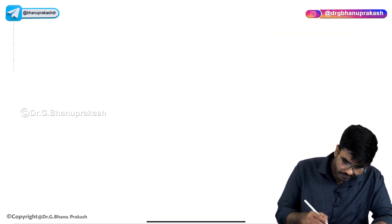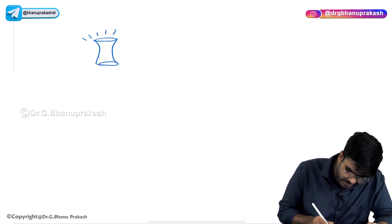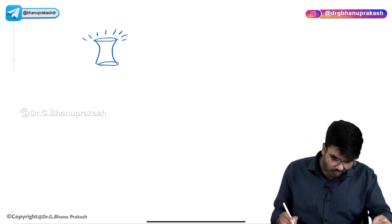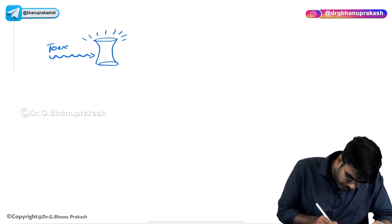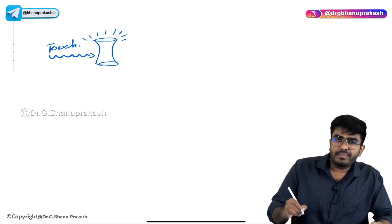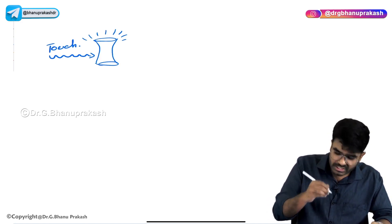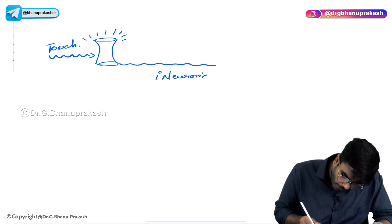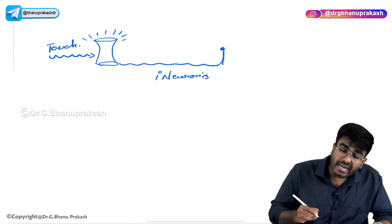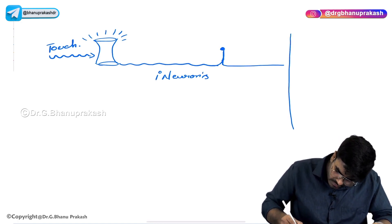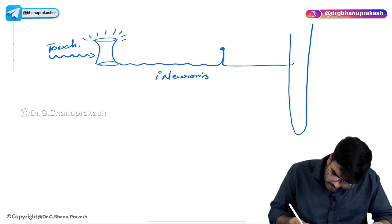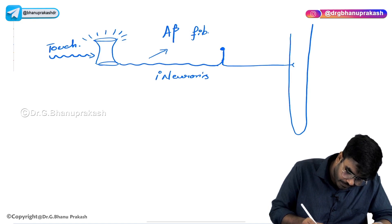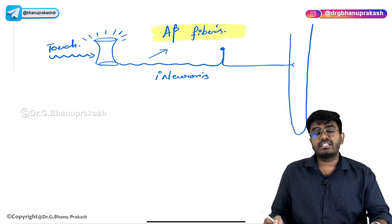Now, any touch receptor — Meissner's, Merkel's, Ruffini's, or Pacinian — converts mechanical touch information into electrical impulse. For that, the receptor needs to be attached to a first order neuron. The first order neuron in the touch pathway is called the A-beta fiber. A-beta fibers are the first order neurons carrying touch information from the receptors into the spinal cord.